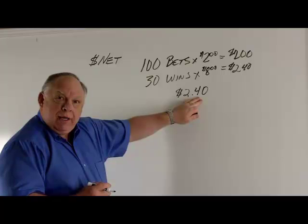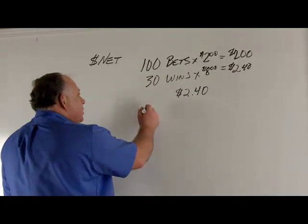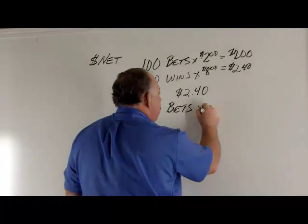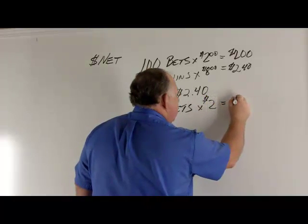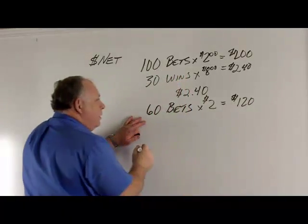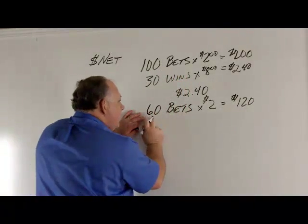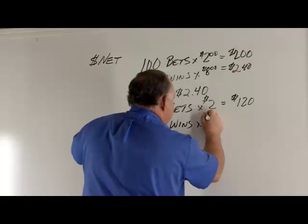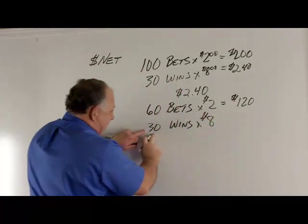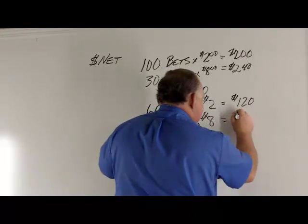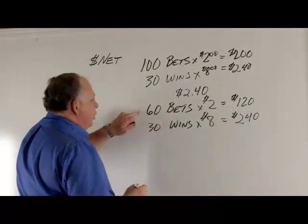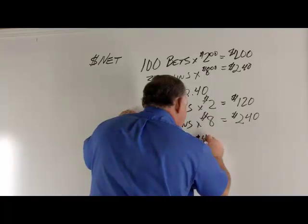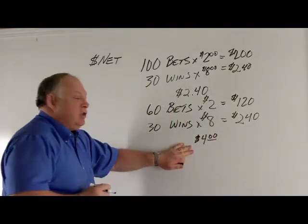If you only had 60 bets, same scenario, $2 each — that's $120 in. It becomes a little more tricky. You still have 30 wins at $8.00, so now you're winning 50%. That's $240. You divide $240 by $120 and you get a $2.00 net — wait, that's a $4.00 net. It's as simple as that, if you're flat betting.